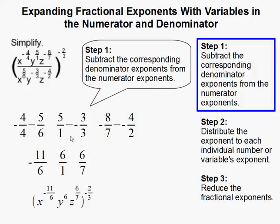So now we can just write it as x to the negative 11 over 6, y to the 6, z to the 6 over 7, and then the entire thing is still raised to the negative 2 thirds power. So I didn't get rid of this guy yet.